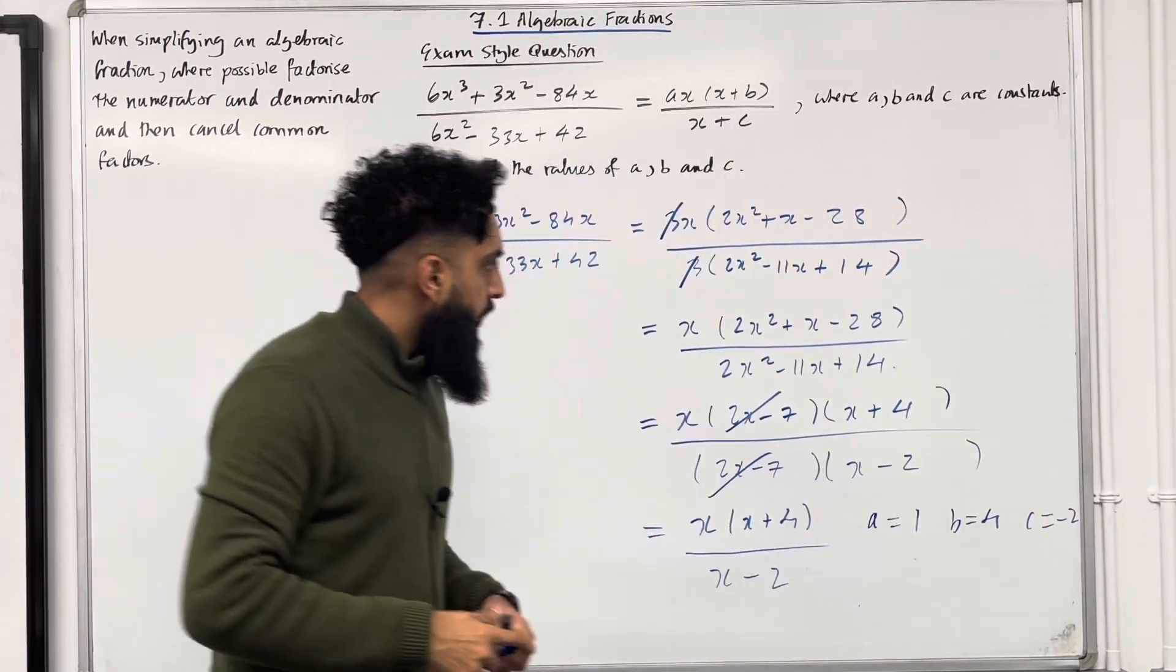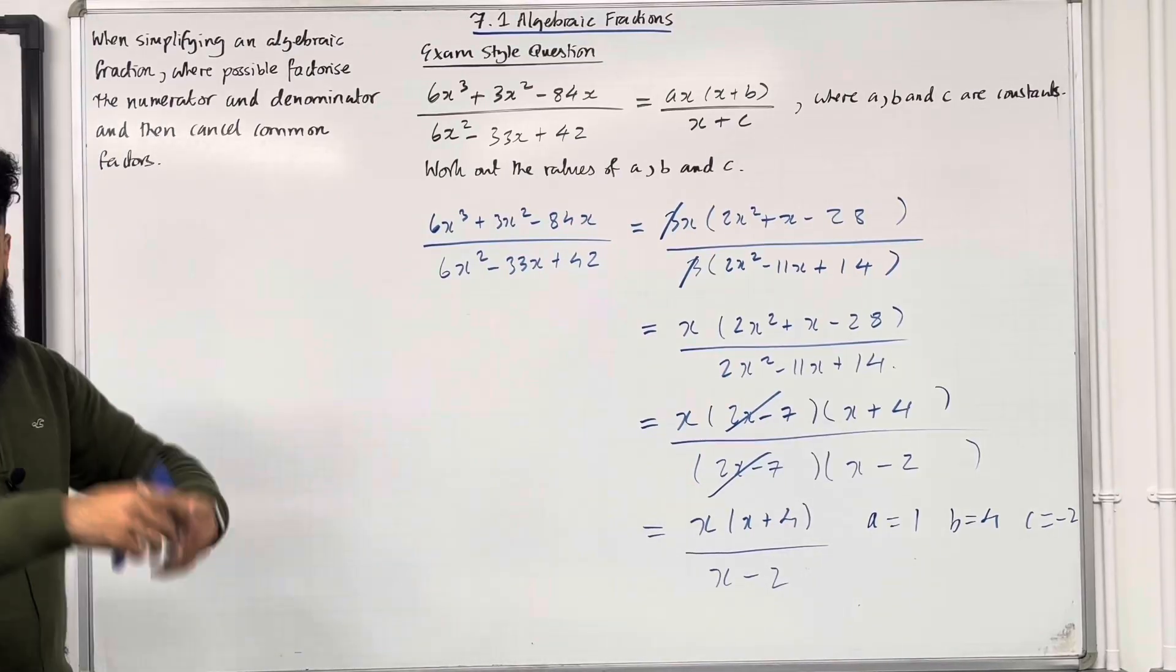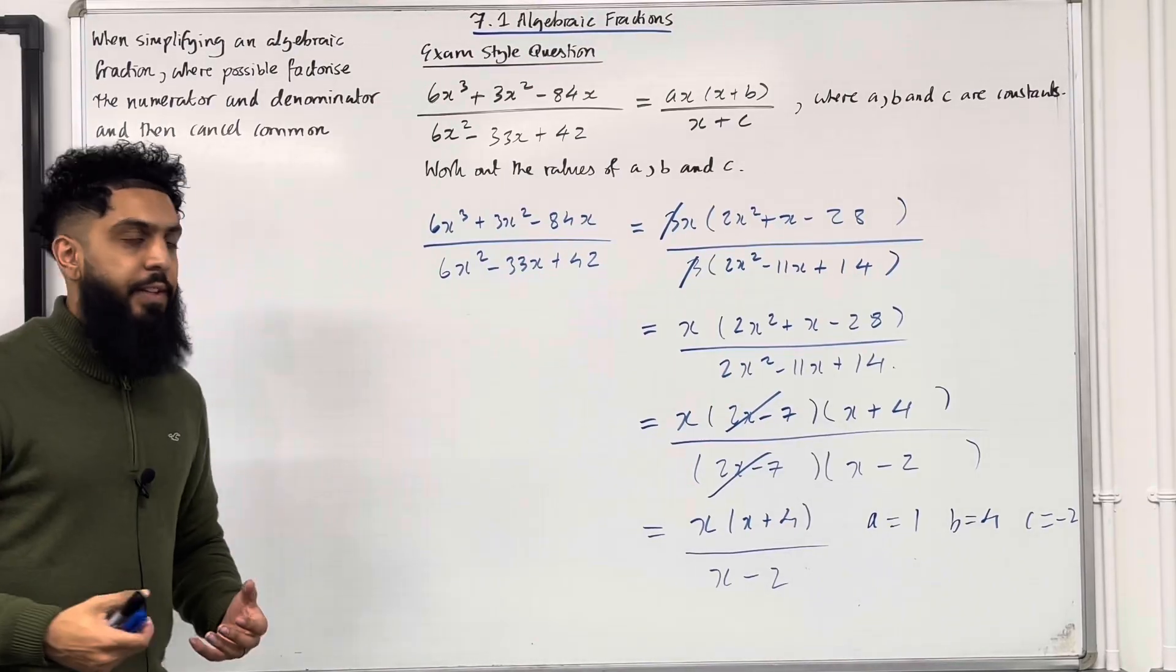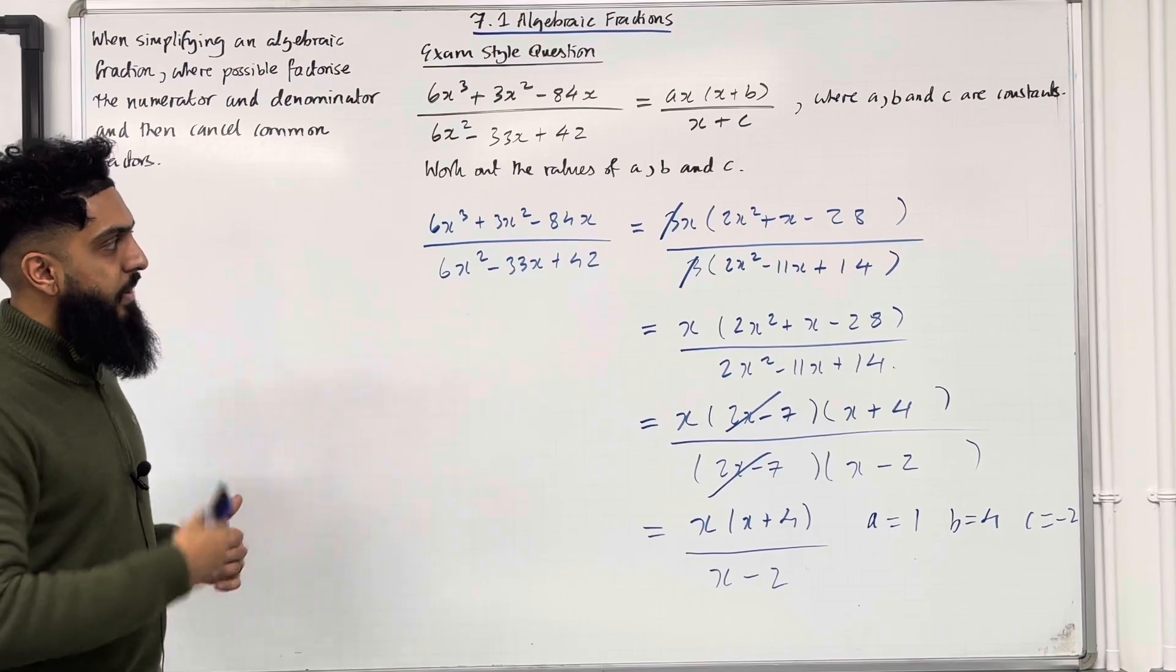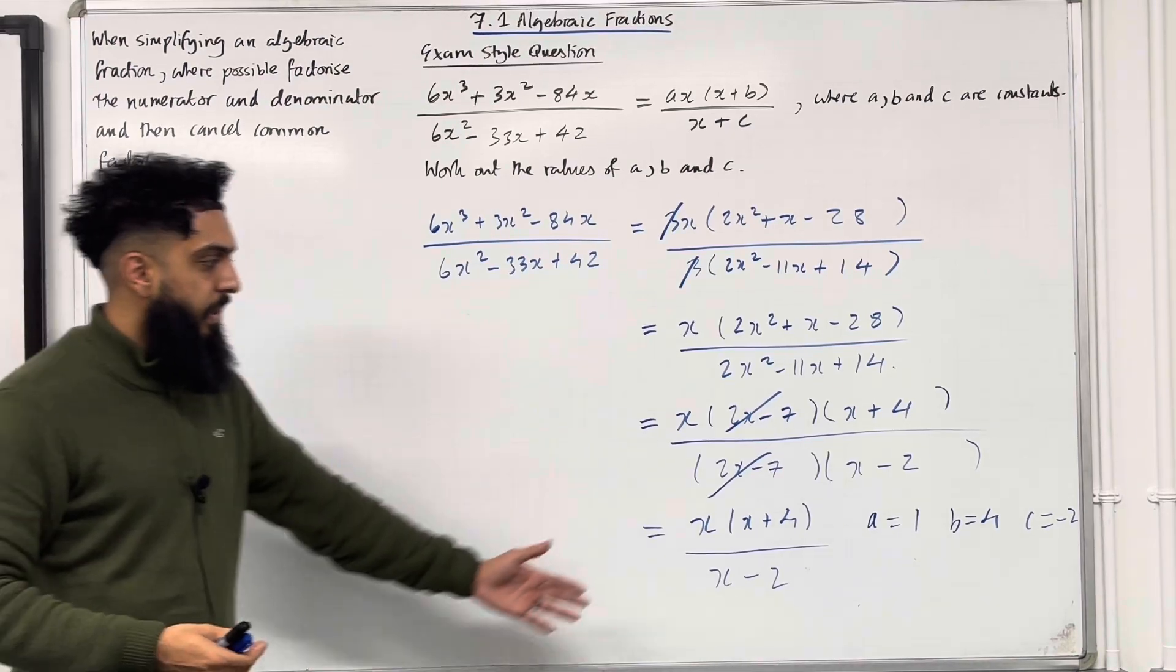Okay? And that's all you had to do. When simplifying algebraic fractions, the key is to factorise the numerator and denominator and then cancel common factors until you get your simplest form.